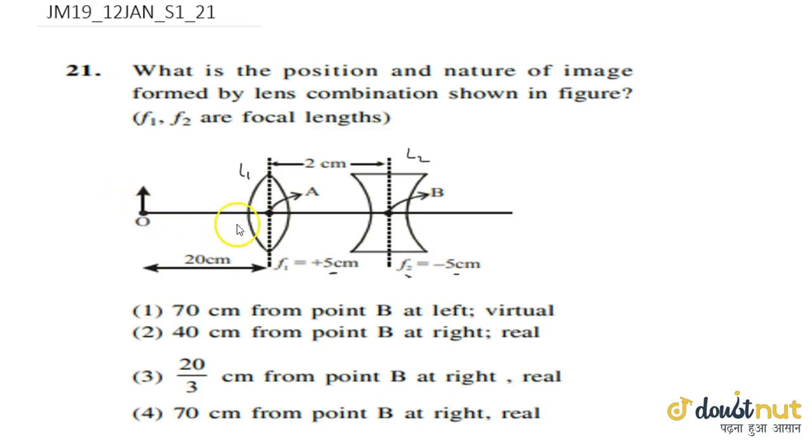The object is placed 20 cm away from the convex lens. Here is the final image, which is the object, where it will be. So start with the question and solution.